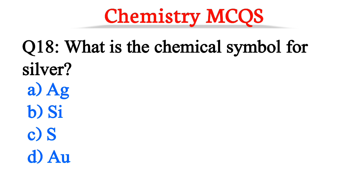Question number 17. What is the chemical symbol for silver? The correct option is option A, Ag.